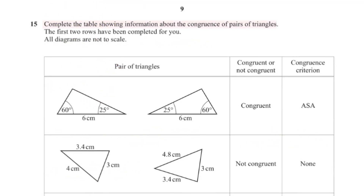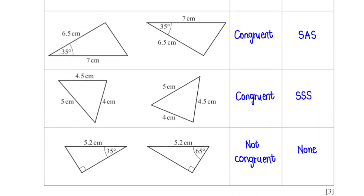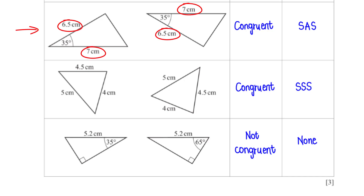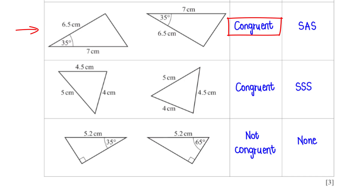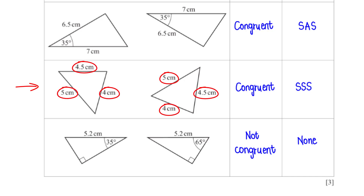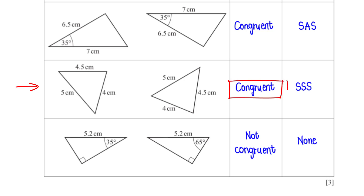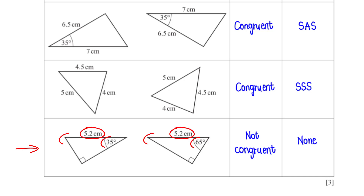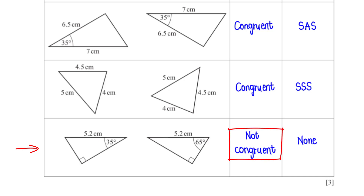Complete the table on congruence of pairs of triangles. Two triangles with two equal sides and the included angle equal are congruent by the Side-Angle-Side (SAS) criteria. Two triangles with all three sides equal are congruent by Side-Side-Side (SSS). Two triangles sharing a side length but with unequal adjacent angles are not congruent — write 'none' under criteria.